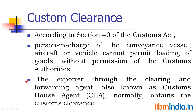The exporter, through the Clearing and Forwarding Agent — also known as a Custom House Agent (CHA) — normally obtains the custom clearance. Numerous times in the past we have seen the exporter sent goods to customs and customs did not give clearance, so they were not able to export those goods to the importer. That is why customs plays a very vital role in export and import business.